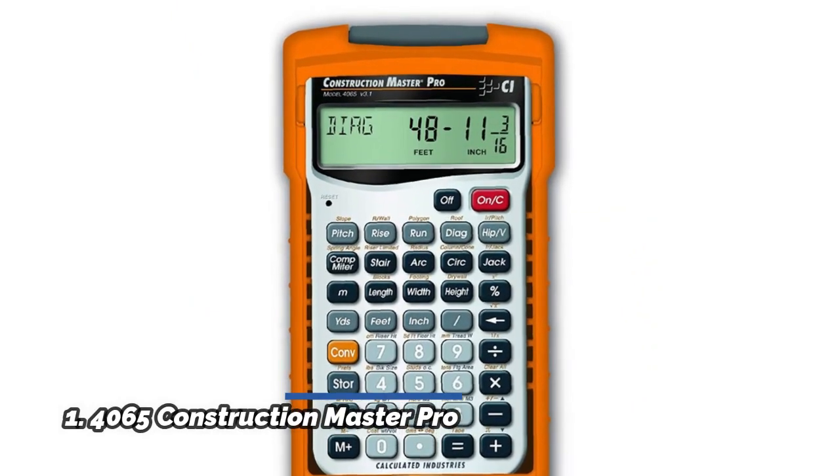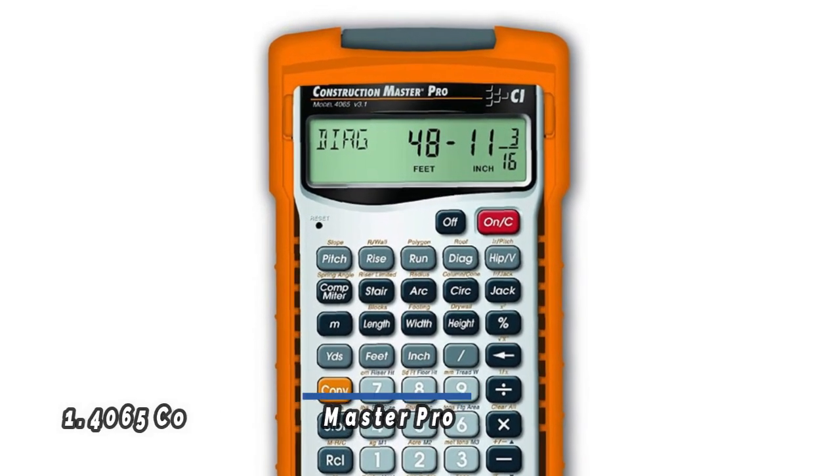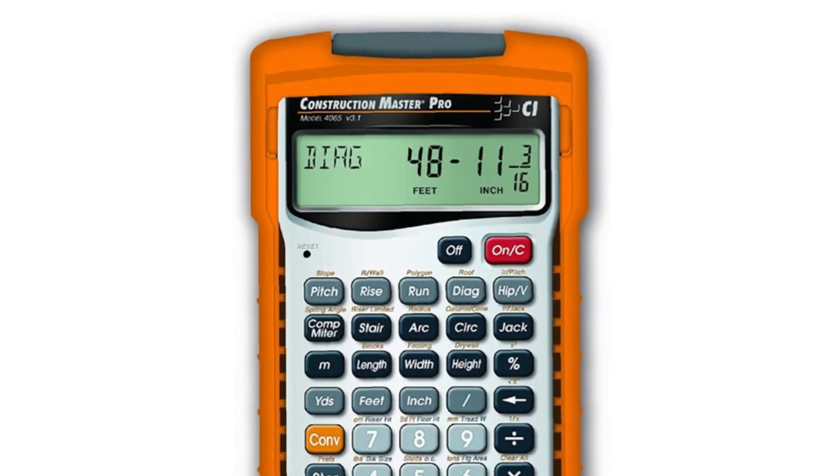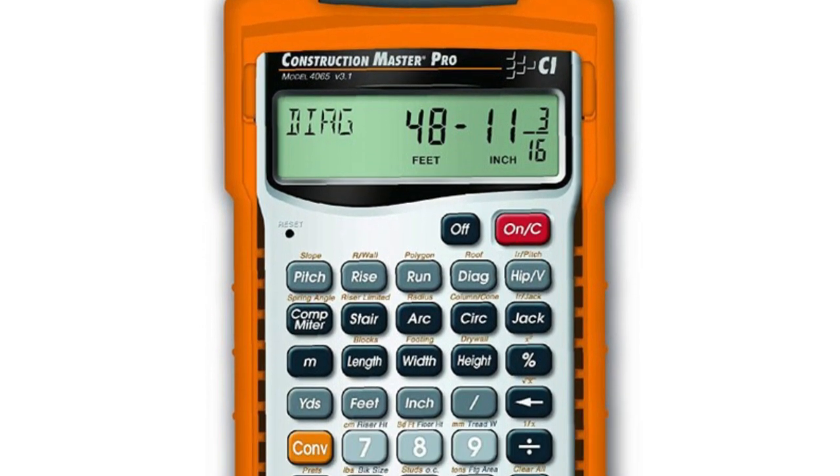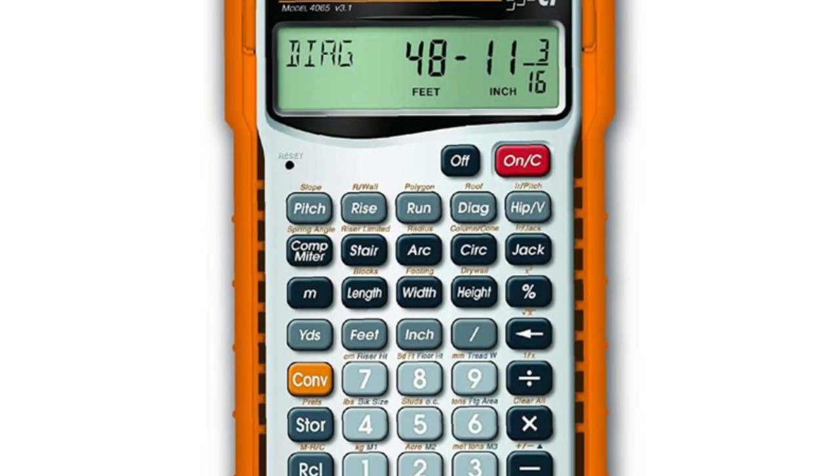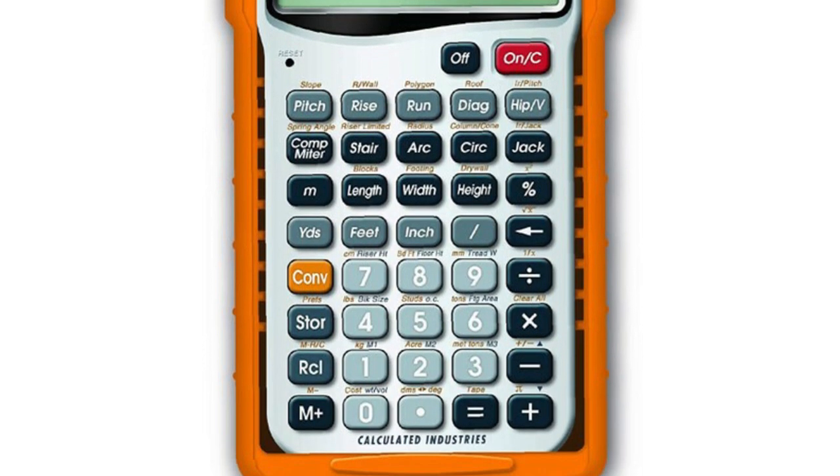Number 1, 4065 Construction Master Pro. Solve all your dimensional math quickly and accurately with the award-winning CM Pro Construction Calculator's powerful built-in solutions for completing layouts, plans, bids, estimates, and more, directly in the building units you prefer.